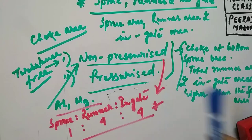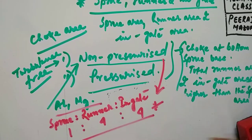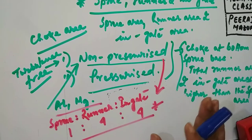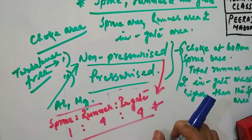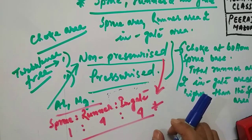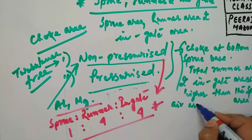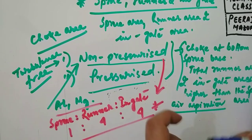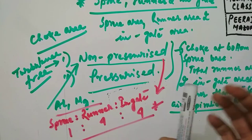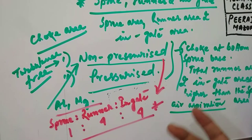The disadvantages of the non-pressurized gating system are: the gating system needs to be carefully designed to ensure that all parts flow full. Otherwise, some elements of the gating system may flow partially, allowing air aspiration. Aspiration means the entrapping of gases inside the casting, which will produce a defective casting.